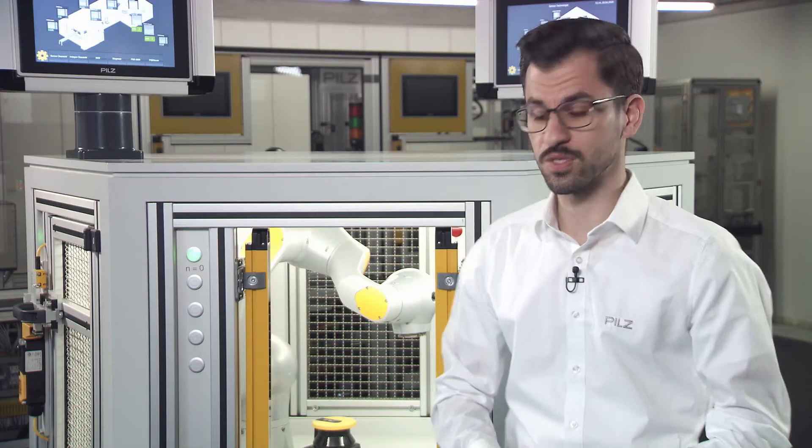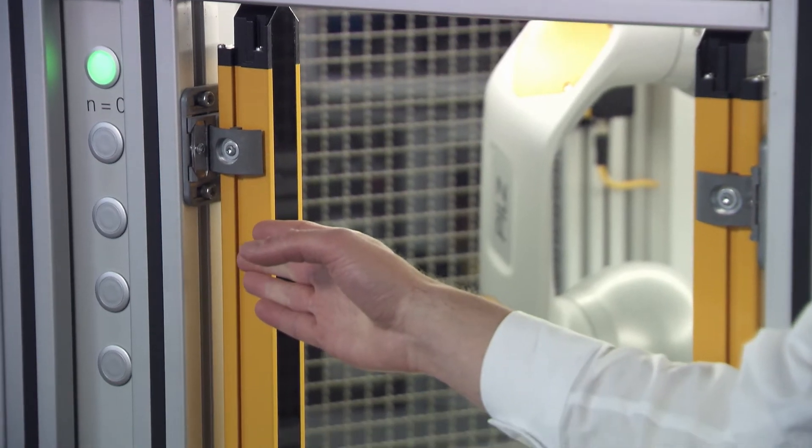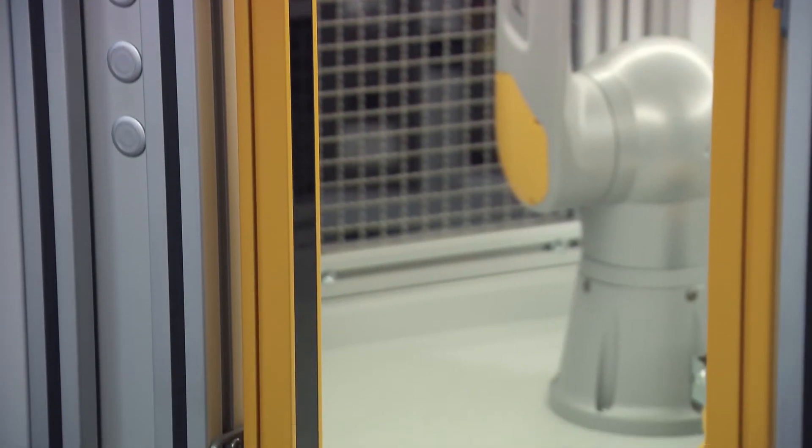For the safeguarding of access or intervention points of machines, or when supplying and removing materials, safety light curtains are usually used. The demo here shows our safety light curtains PSENOP2.